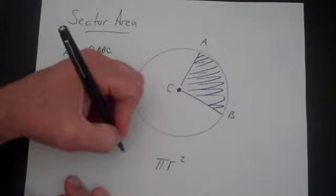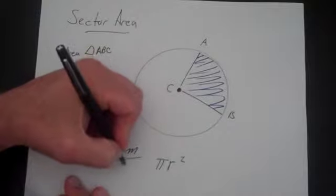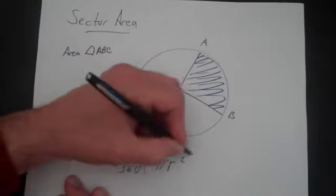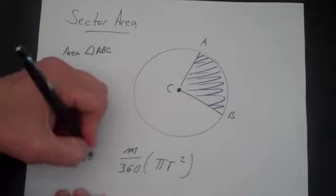And in degrees, that's just going to be m over 360 times pi r squared. And that's going to be our area of a sector formula.